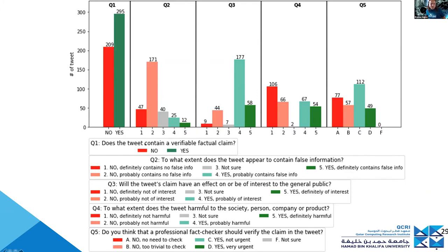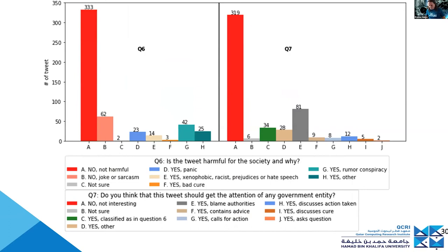The labels show roughly a 50/50 split between tweets that do and don't contain a verifiable factual claim. There are also labels for the extent to which a tweet is likely to contain false information. The later questions are more about explainability — looking at why it is harmful: because it's xenophobic, racist, or because it spreads rumors.